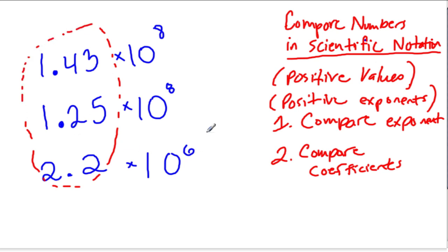So in this list, we have these numbers. You might be tempted to think that this number might be larger, because 2.2 is larger than 1.25 and 1.43. But the exponent is smaller, so this is the smallest number. The next largest number is this number, because these two exponents are equal. If the exponents are equal, after we compare the exponents, we go to the next step, which is to compare the coefficients. This coefficient is larger than this one.